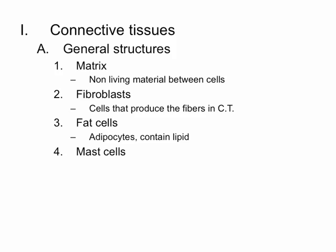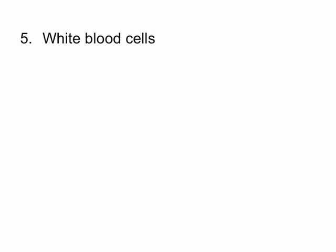Mast cells found in connective tissues are immune cells. Their job is to release histamine, which will initiate an allergic reaction or an inflammatory response. Other types of cells that can be found in connective tissues would be white blood cells, which also function in immunity.